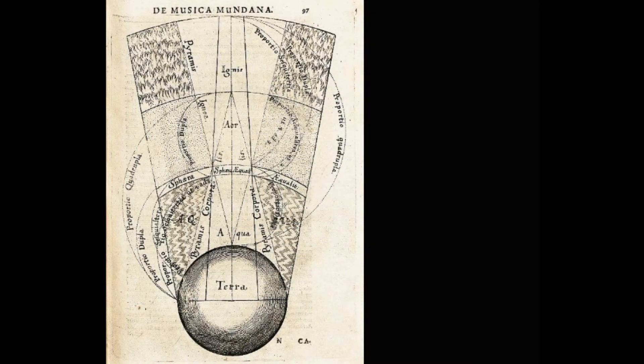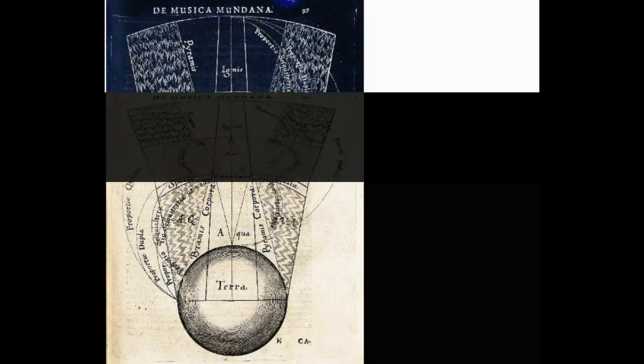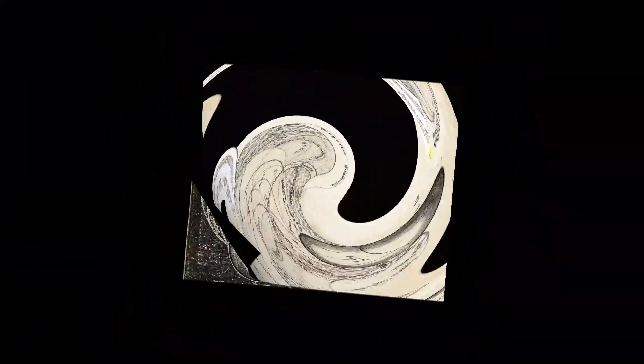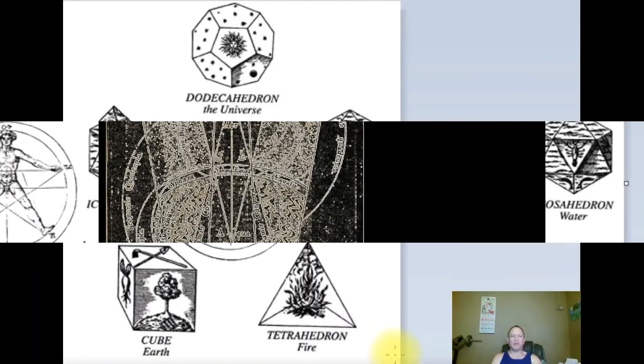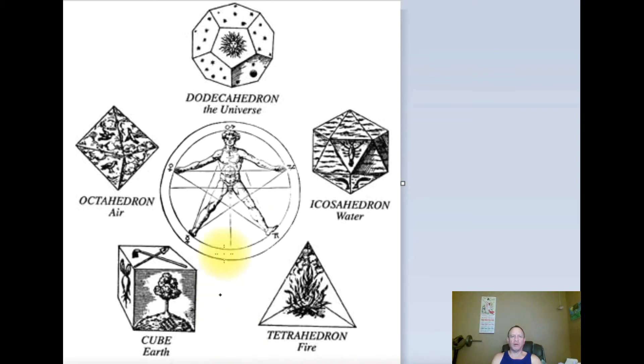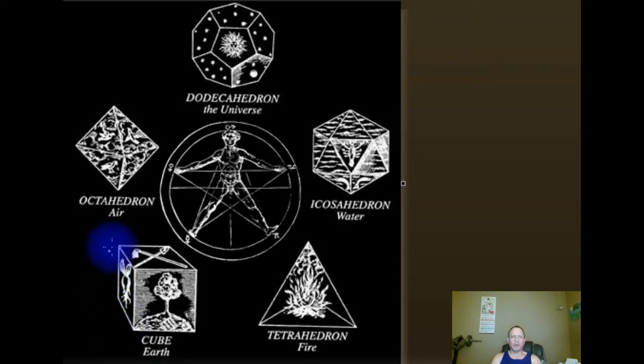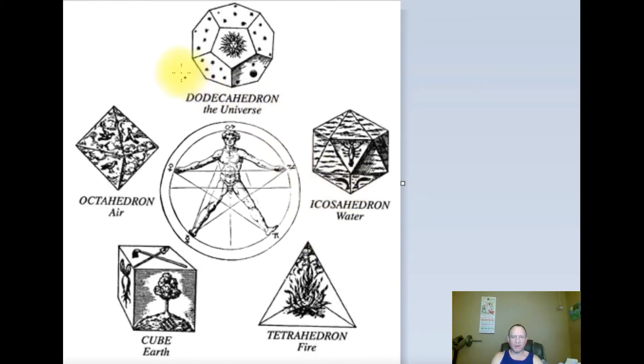The musica mundana, segment of the macrocosm, showing the elements, spheres of earth, water, air, and fire. The geometry of the tetrahedron represented the fire. The cube represented the earth. The octahedron, air. Icosahedron was the water. And the universe is represented by the dodecahedron.